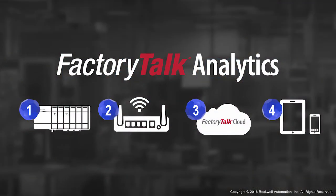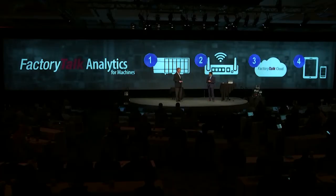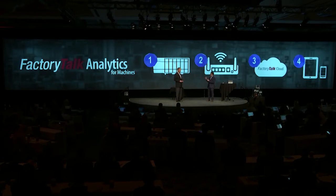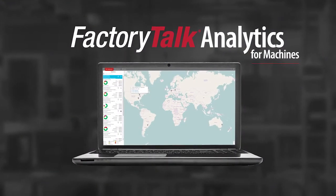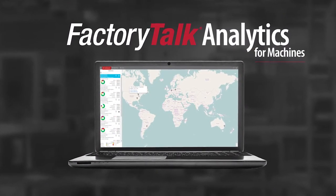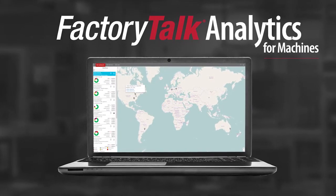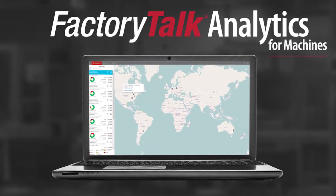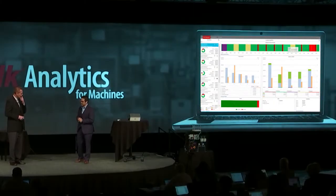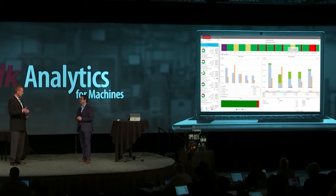OEMs can now embed a gateway into the machine that they make. Once commissioned, the data flows securely — taking select information from specific controllers and sending it to our FactoryTalk cloud. The information is gathered and presented to our OEMs in the form of dashboards, so they have real-time, actionable information. And they didn't have to do any cloud coding or any type of dashboard development — that was all done for them. This product is a great example of using domain expertise to drive simplification for the customers.